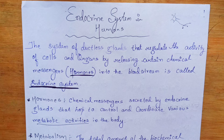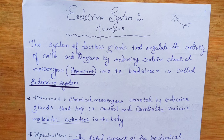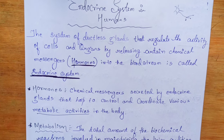The endocrine system helps with growth and metabolism. Metabolism means all the reactions in our body — like carbohydrates turning into different things, the digestion process, nutrients being processed — all of these are related to metabolism.